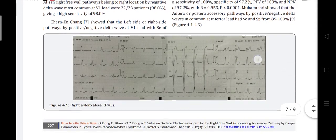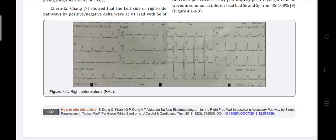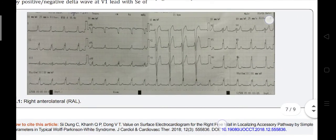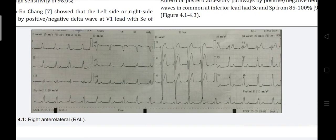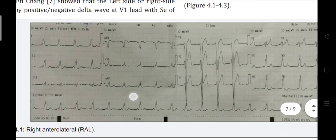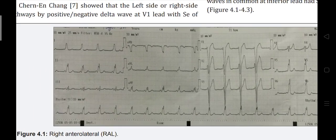Example 1: Morphology is LBBB — clearly a right-sided pathway. Transition occurs at V4, so it is a free wall pathway, either anterolateral or lateral. Inferior leads are positive, confirming it is not a posterior pathway. Delta waves and QRS are both positive in inferior leads. Therefore, this is a right anterolateral pathway.